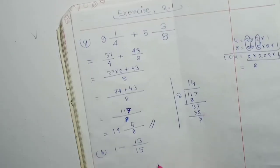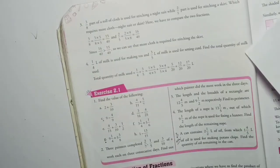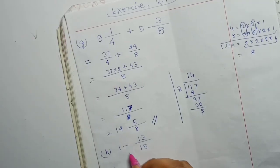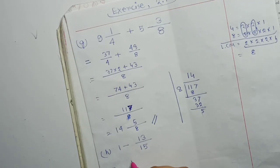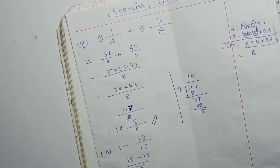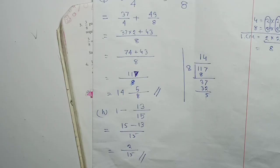Last question: 1 minus 13 by 15. This is a very simple question. 1 is written as 15 by 15. So 15 minus 13 divided by 15 equals 2 by 15. That is the answer.